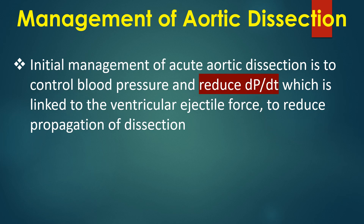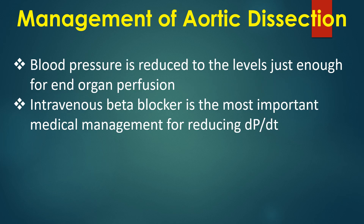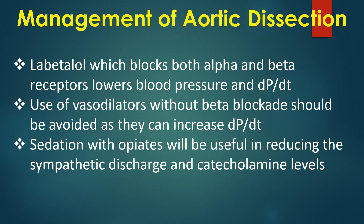Initial management of acute aortic dissection is to control blood pressure and reduce dP/dT, which is linked to ventricular ejection force, to reduce propagation of the dissection. Blood pressure is reduced to levels just sufficient for end-organ perfusion. Intravenous beta-blocker is the most important medical management. Labetalol, which blocks both alpha and beta receptors, lowers blood pressure and dP/dT. Vasodilators without beta blockade should be avoided as they increase dP/dT. Sedation with opiates helps reduce sympathetic discharge and catecholamine levels.